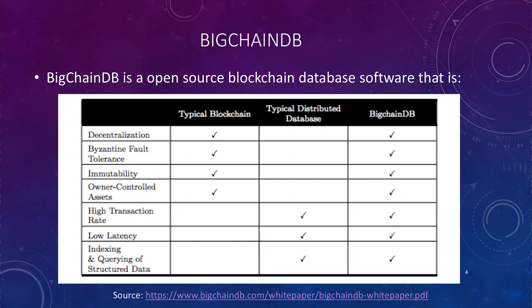It also provides customizable assets — an asset is just the data that's stored in your blockchain, and you get to decide what characteristics and attributes go into that. On top of all of that, we still have indexing and querying capability for the data in the back-end database, thanks to MongoDB. BigchainDB really takes the best of both worlds of a typical blockchain and a distributed database and merges it all together for a super secure system.